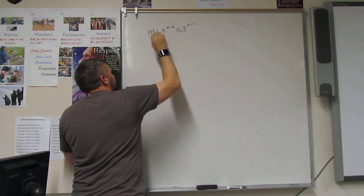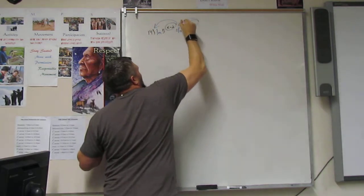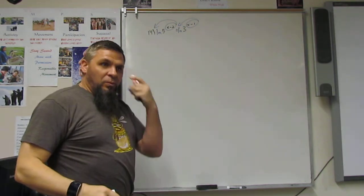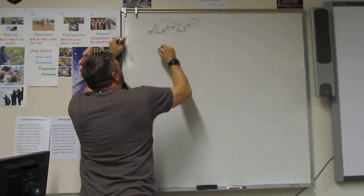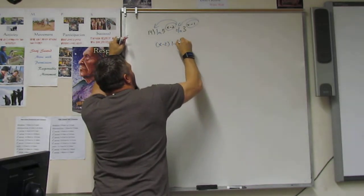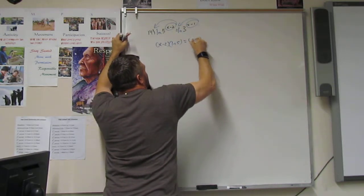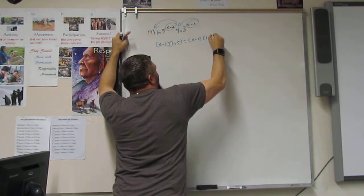So, I take a natural log of both sides. What that allows me to do is to do the power rule and say that I've got x minus 2 times the log of 5, and x minus 1 times the log of 3.